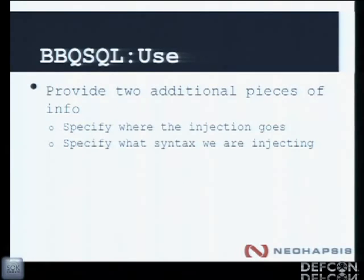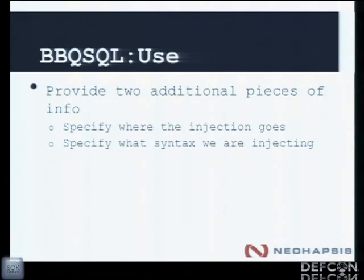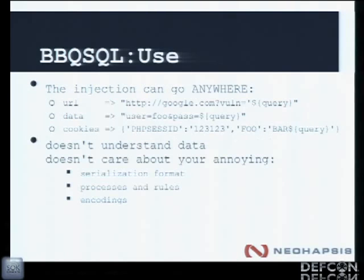This is when we start talking about it being a semi-automatic tool as opposed to an automatic tool — and by the way, we made up that term. You need to specify where the injection is going to go into the request. This is an exploitation tool, so you need to tell it where the vulnerability is, where it's going to be injecting the SQL logic into the existing request. Additionally you'll need to specify what that SQL syntax looks like. This is what allows us to be database agnostic — different databases have a lot of syntax variations, which is kind of crazy because it's SQL.